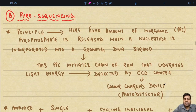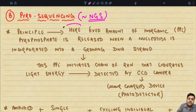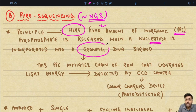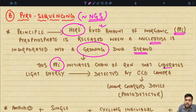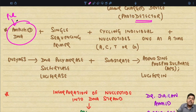Pyrosequencing was included in older editions of Robbins but is not in the 10th and 11th editions because it replicates the NGS concept — though it can still be asked as a short note in exams. Principle: a fixed amount of inorganic pyrophosphate is released when a nucleotide is incorporated into a growing DNA strand. This inorganic pyrophosphate initiates a chain of reactions that liberates light energy, detected by a CCD camera acting as a photodetector. Raw materials required: amplified DNA from PCR and a single sequencing primer.